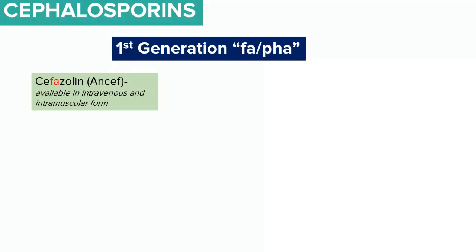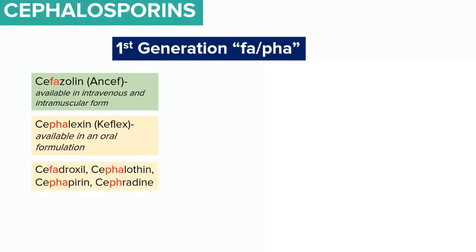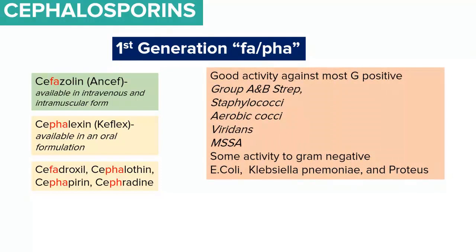The first-generation cephalosporins contain the phrase 'pha' — that is, 'fa' or 'pha'. Examples include cefazolin, available in intravenous or intramuscular form, and cefalexin, commonly known as Keflex, which is available in oral formulation. Other examples are cefadroxil, cephalothin, cephapirin, and cephradine. They all contain the phrase 'fa', which helps with remembrance.